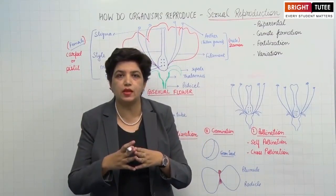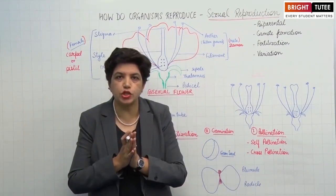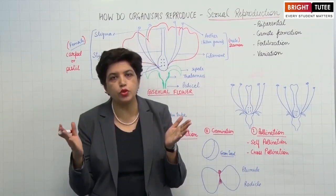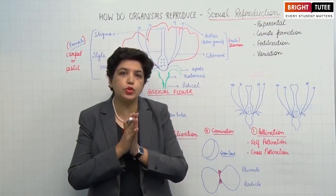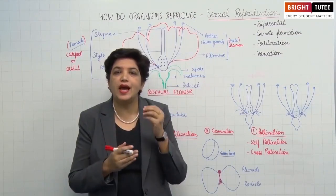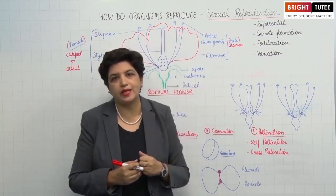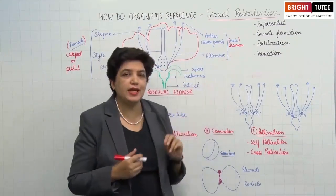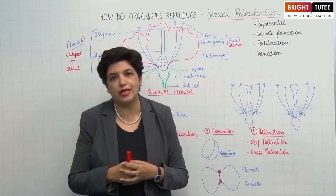Third feature is fertilization — the male and female gametes fuse together to form a new cell called the zygote. During fertilization, half the chromosomes come from the male gamete and half from the female gamete, so when they fuse together the new cell has the same number of chromosomes as the parent cells.